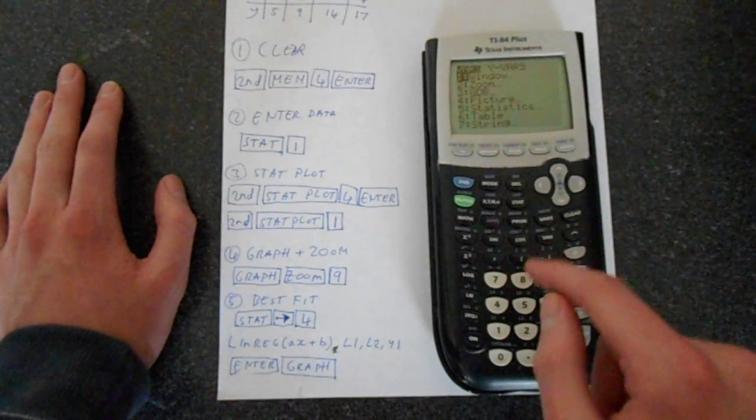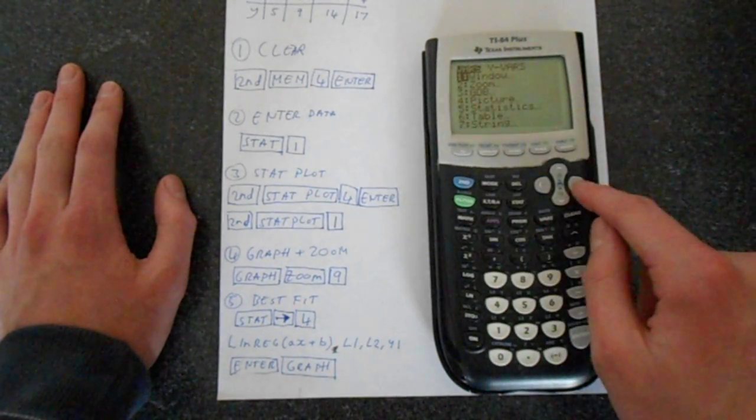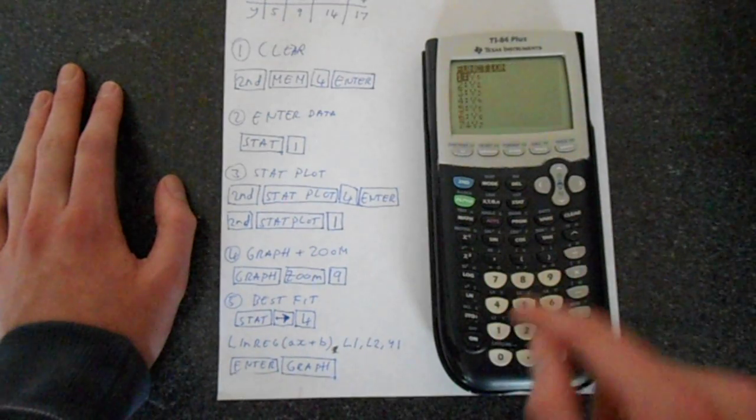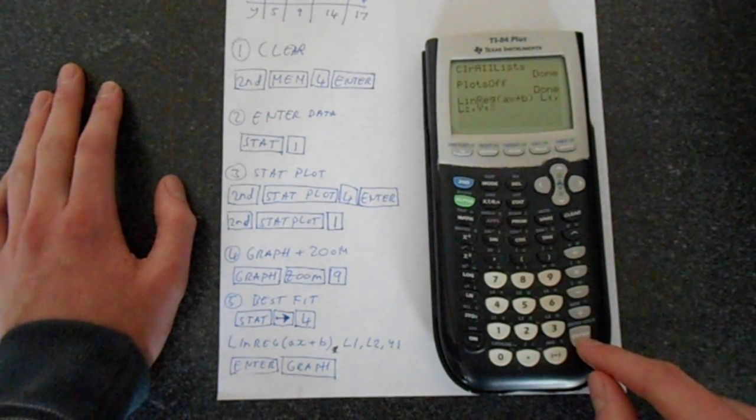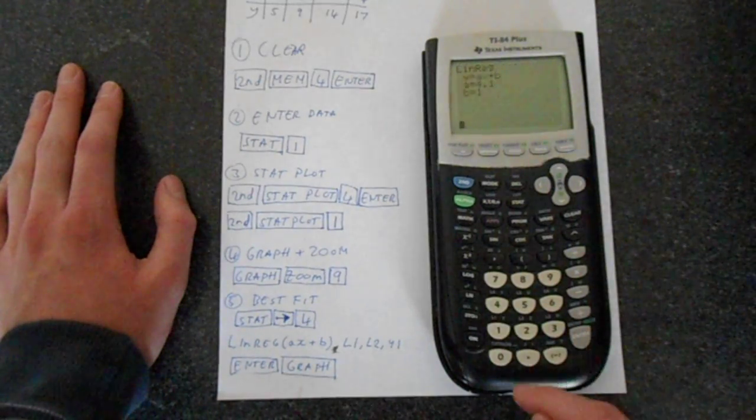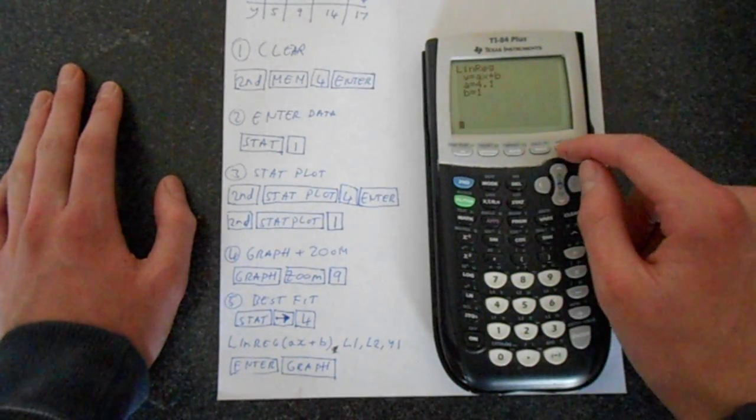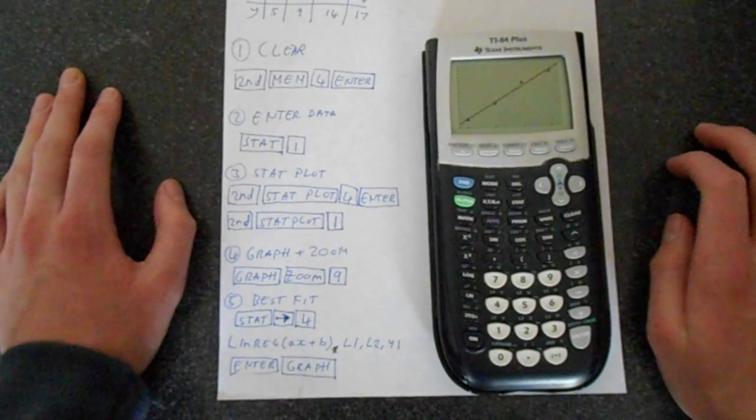Y1's hidden away in vars, then yvars, function, and we've got y1 here. And then we just press enter. This does the linear regression. And then we press graph. And that puts on our line.